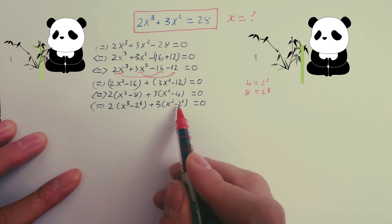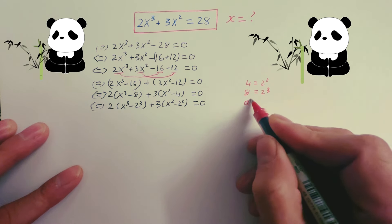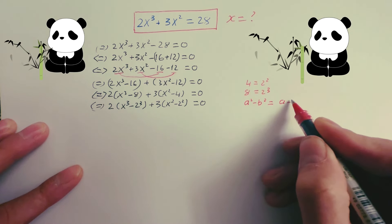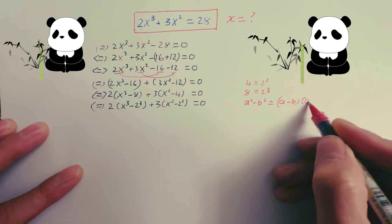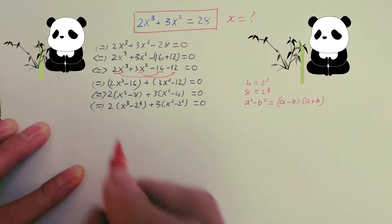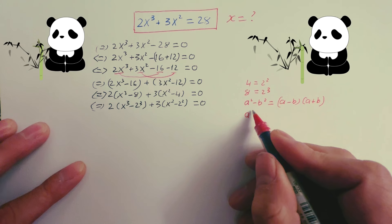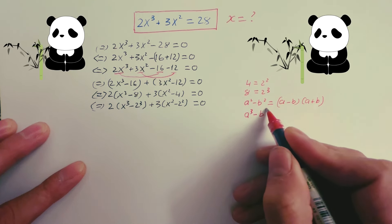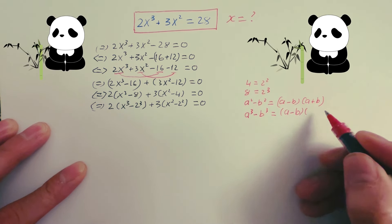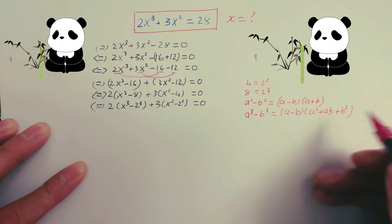Now look at x squared minus 2 squared. Do you know the formula: a squared minus b squared equals (a minus b)(a plus b)? And for x cubed minus 2 cubed, you have the formula: a cubed minus b cubed equals (a minus b)(a squared plus ab plus b squared).